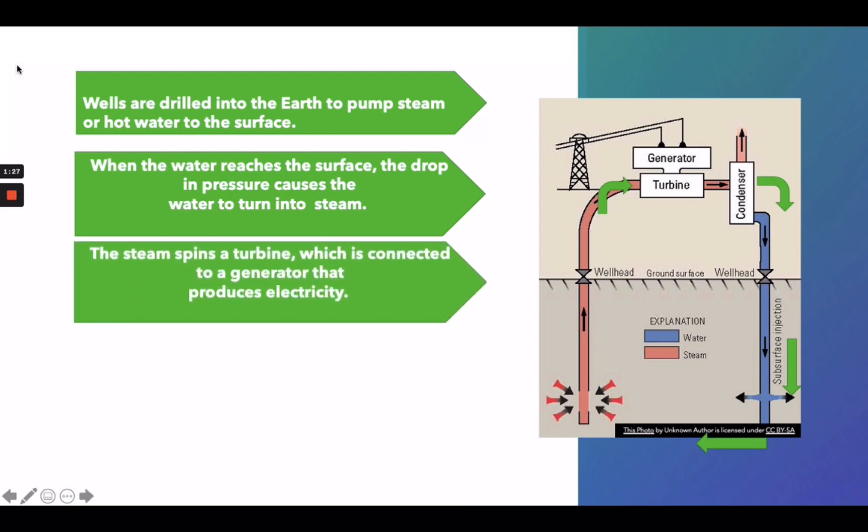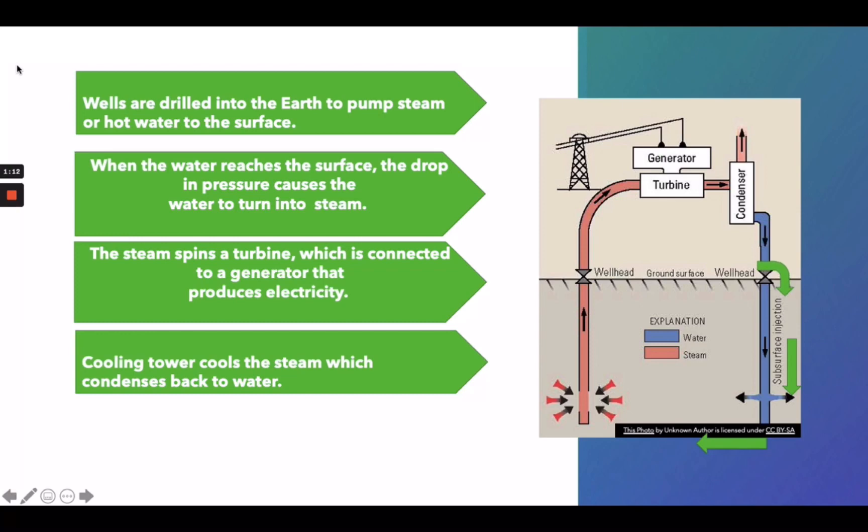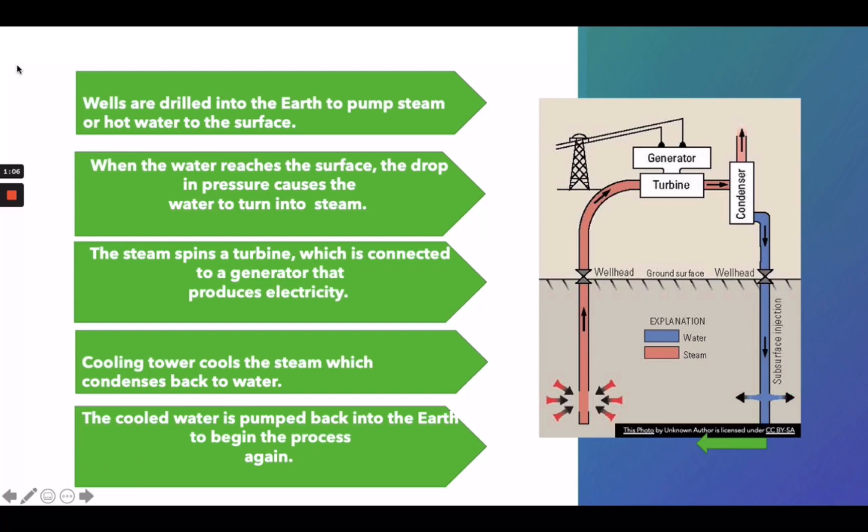Third step, the steam spins a turbine which is connected to a generator that produces electricity. Fourth, cooling tower pulls the steam which condenses back to water. For the last step, the cool water is pumped back into the Earth to begin the process again. This is the reason why geothermal energy is considered a renewable energy.